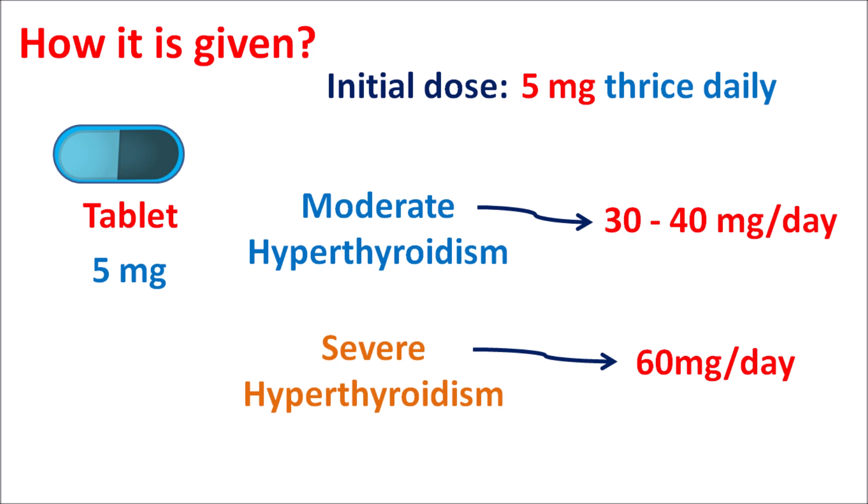Methimazole is not indicated in pregnant women. It can be given at an initial dose of 5 mg three times daily, with the dose escalated based on severity. The maximum dose is 60 mg per day given as three divided doses.